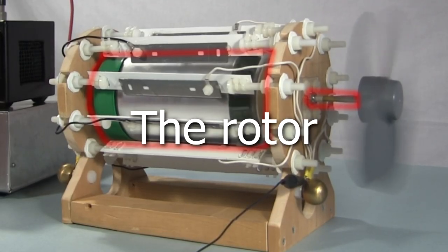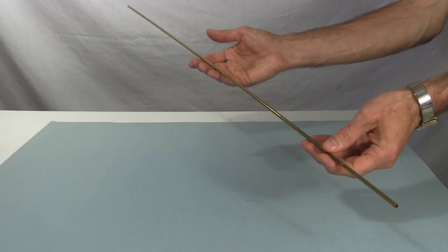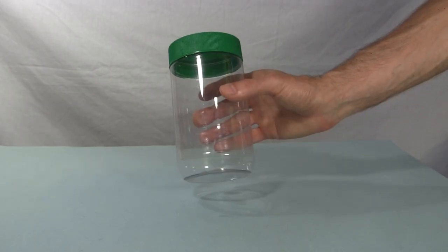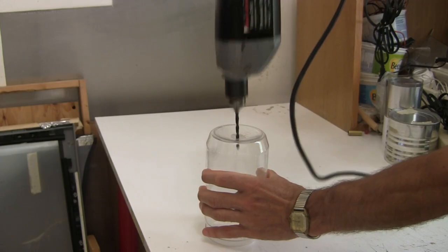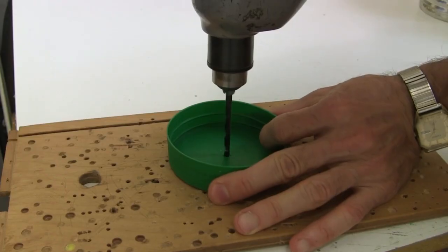First I make the rotor. For the shaft I'm using this brass from a hobby store. For the cylinder I start with a peanut butter jar since it has nice long straight and parallel sides. I drill holes in the bottom and in the cover that are a little larger than the shaft.